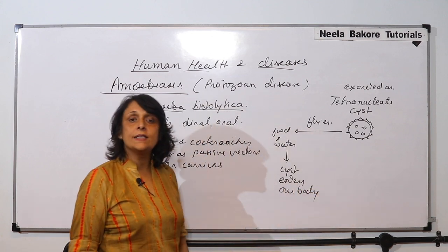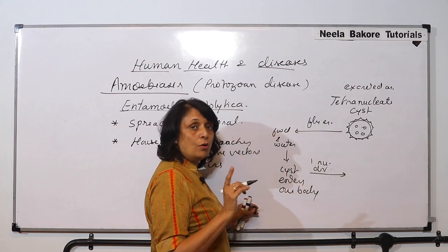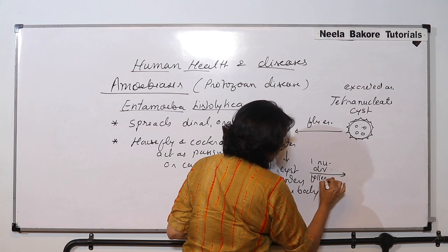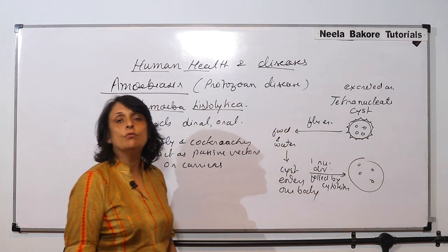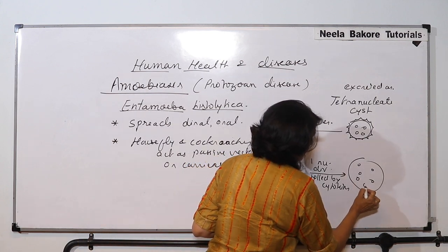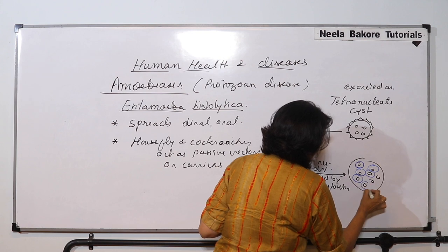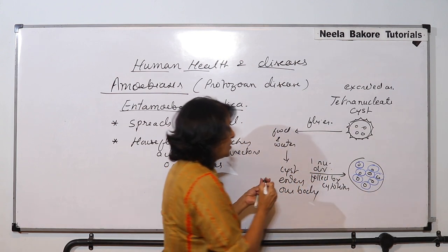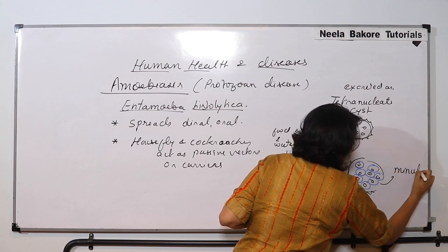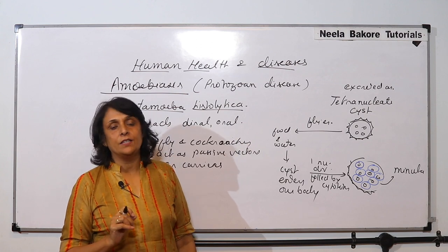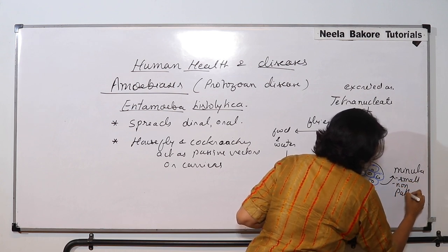As soon as the cyst enters, there is a nuclear division followed by cytokinesis. There were four nuclei, and after division we get eight nuclei. Every nucleus gets surrounded by cytoplasm and a membrane, and then the cyst ruptures. The cells which come out are called minuta. Minuta is the non-infective, non-pathogenic stage — it is small in size.